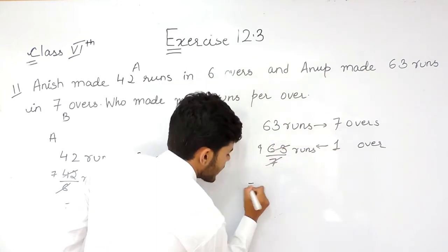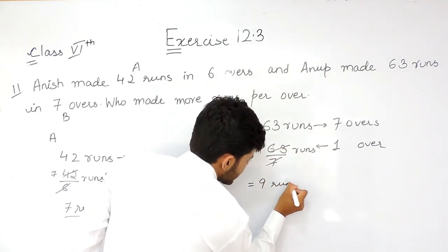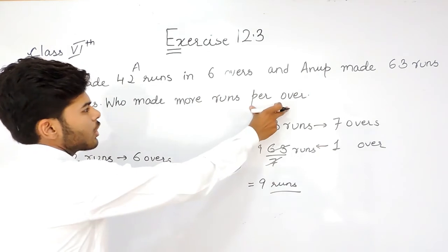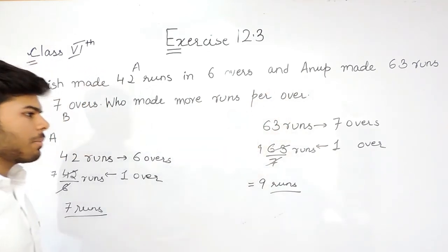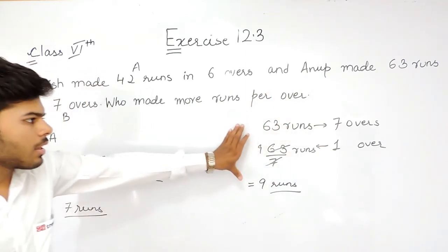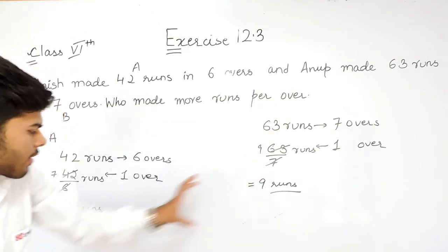9 times 63, that means 9 runs in 1 over. And we were told per over, that means in 1 over. So, Anup scored 9 runs.